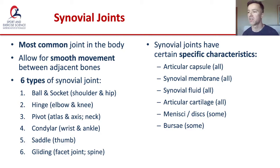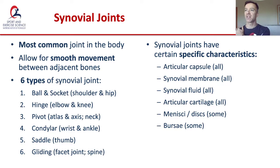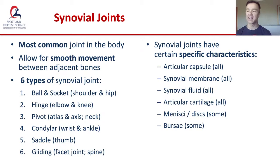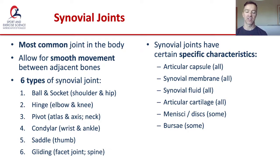Very similar to a condylar joint but allowing more movement is a saddle joint — an example of that is your thumb. Finally, we've got a gliding joint, where two essentially flat surfaces meet and there is limited sliding motion. An example of that is the joint between your collarbone and your scapula, or a facet joint in your spine.